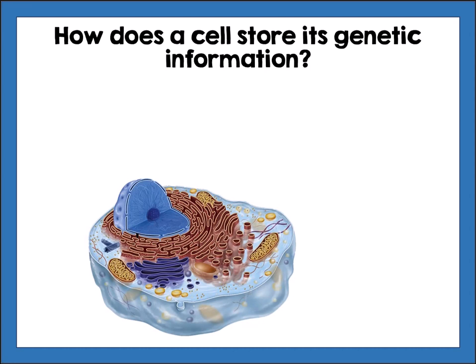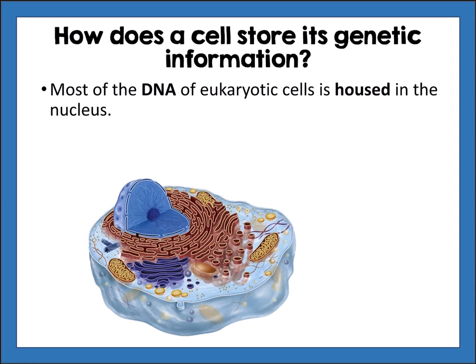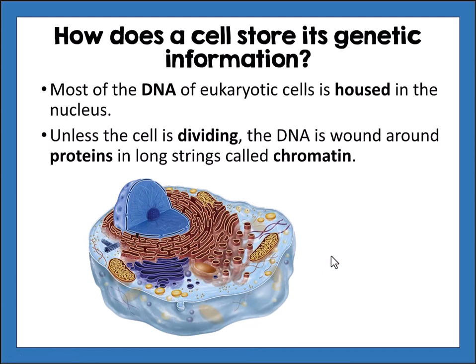How does a cell store its genetic information? Most of the DNA of eukaryotic cells is housed in the nucleus — in this picture, that is the blue structure. Unless the cell is dividing, the DNA is wound around proteins in long strings called chromatin. We'll talk more about what happens to the DNA when the cell is dividing later.